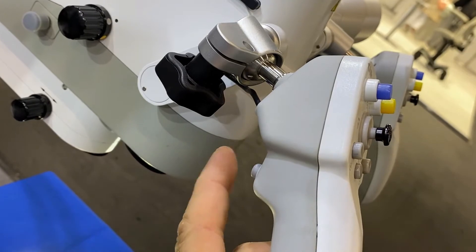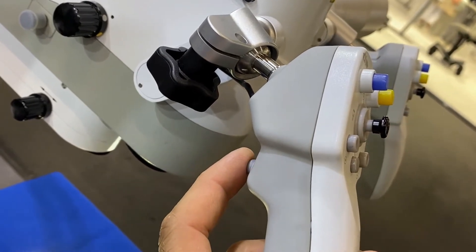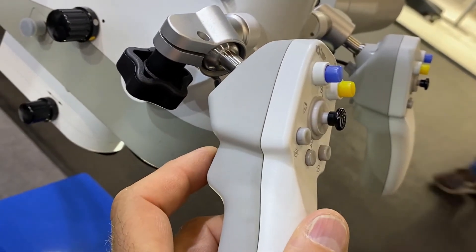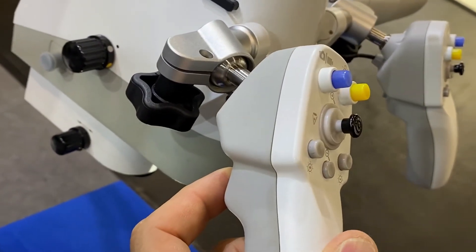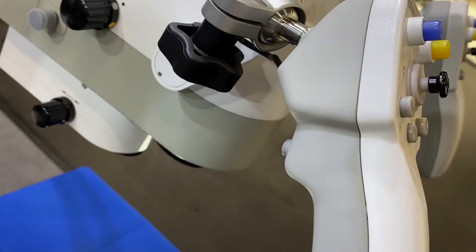The activation of the magnetic brake is always on the bottom of each side of the grip. So if I push the button here I lose the magnetic brake and if I let the button go the microscope is fixed again.